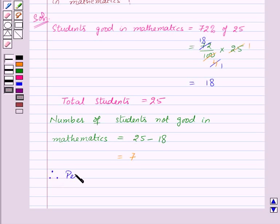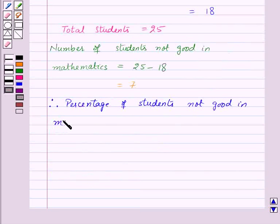the percentage of students not good in mathematics is equal to the number of students not good in mathematics, 7, out of 25 total students.